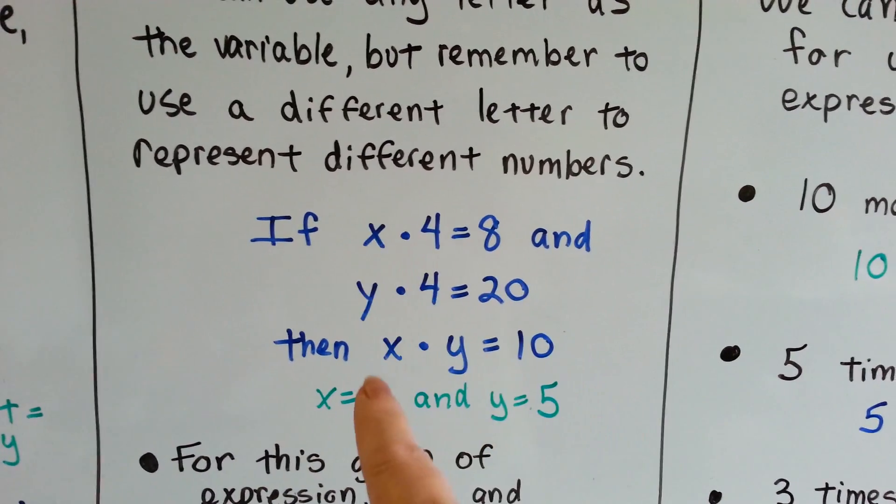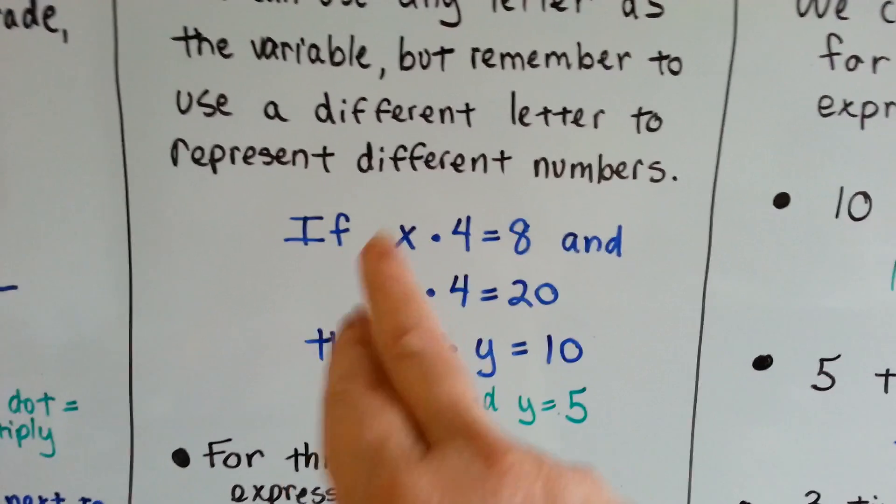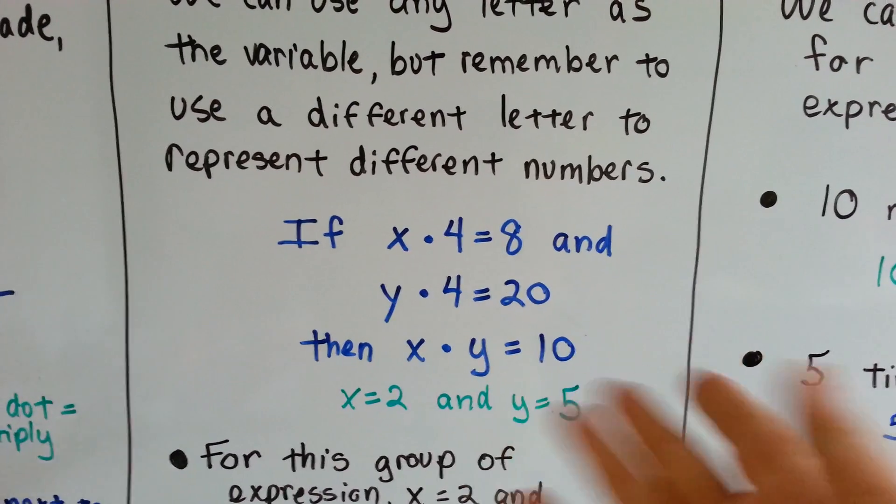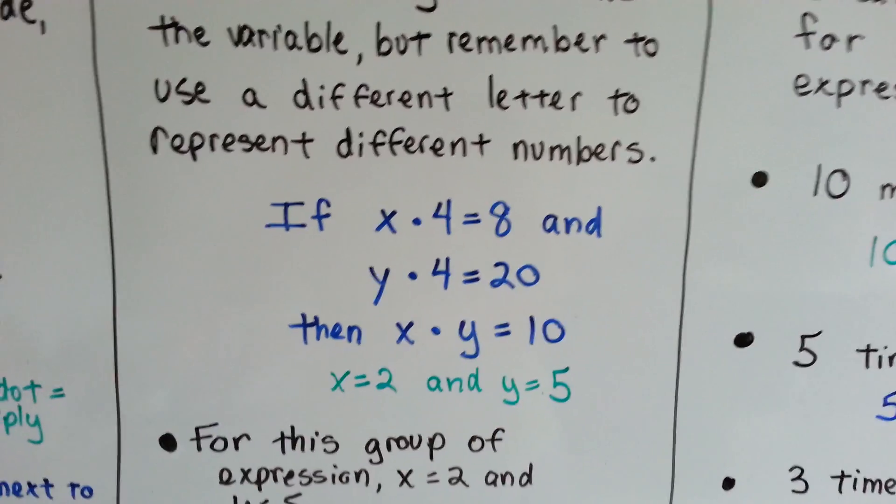So they each represented a different number. You can't have x equal a 3 or a 5 in the same problem, because it would be too confusing. They each have to be assigned their own number.